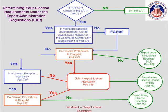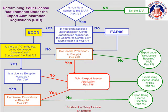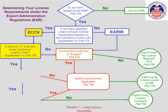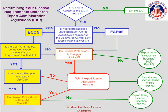When determining whether a license is required for your transaction, you generally look at the ECCN and country of destination. However, General Prohibitions 4 through 10 may also affect whether you may use a license exception. If you determine that your export or re-export requires a license due to the ECCN and country of destination, and determine that there's a potential license exception available under Part 740 of the EAR, you still need to look to see if General Prohibitions 4 through 10 apply to your transaction, because some of these General Prohibitions preclude the use of a license exception.